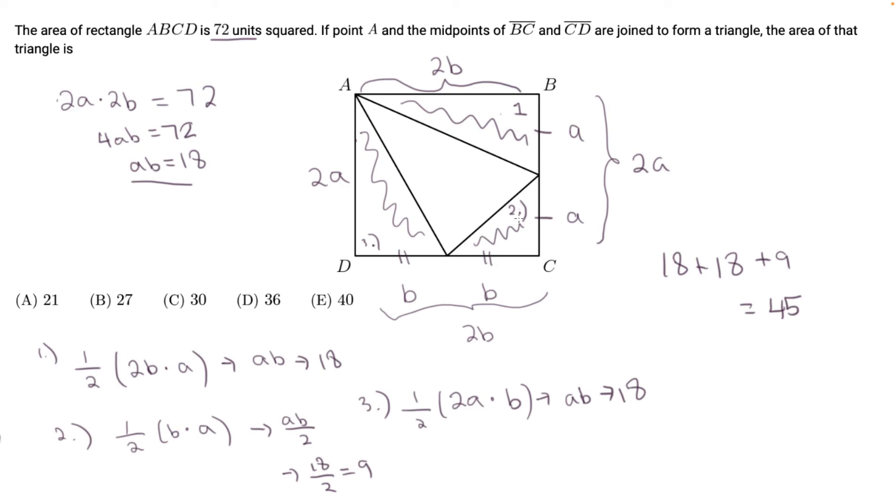That's the area of the three triangles combined. So we take the area of the rectangle, which was 72, and subtract 45. And that's 27. So B is our answer.